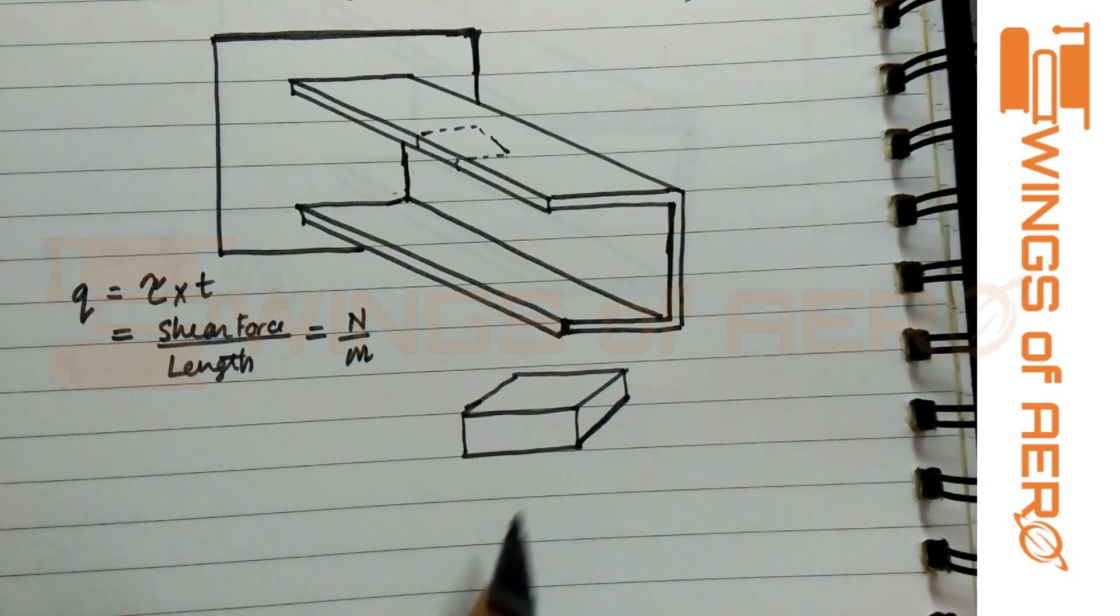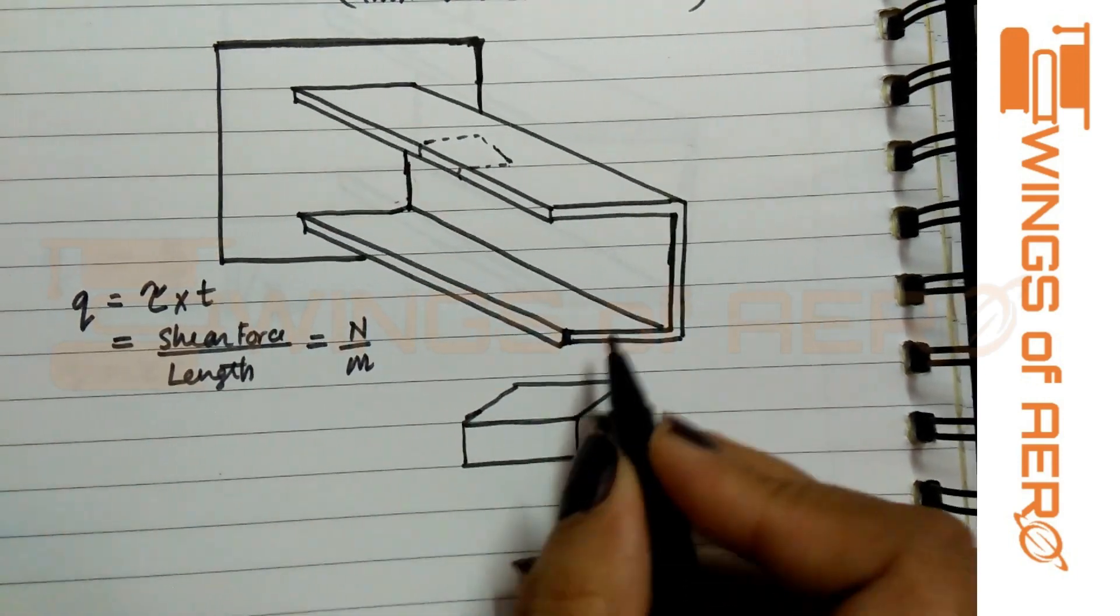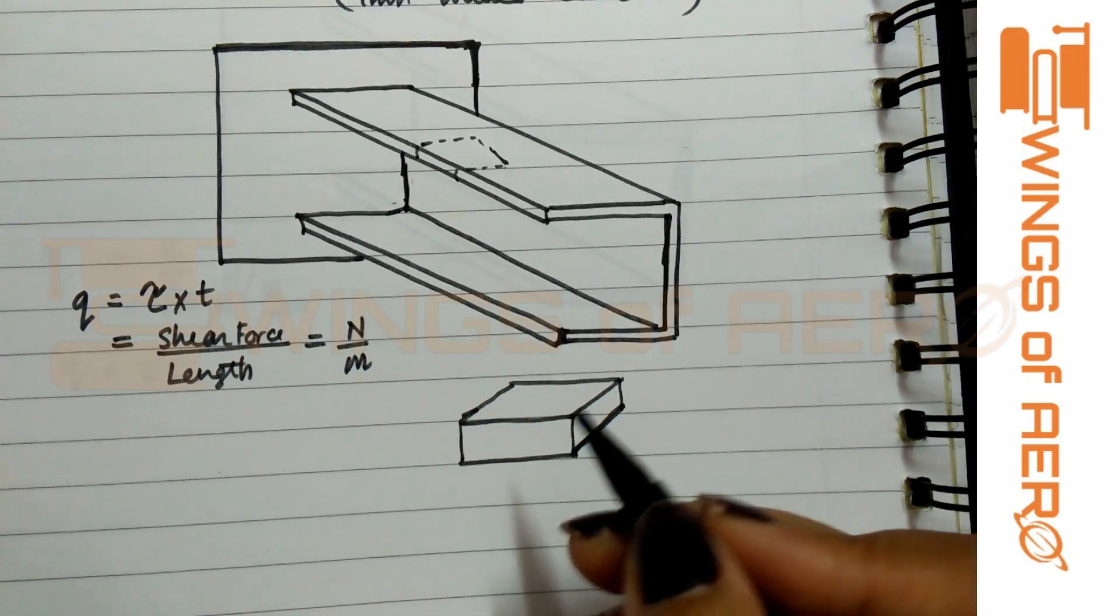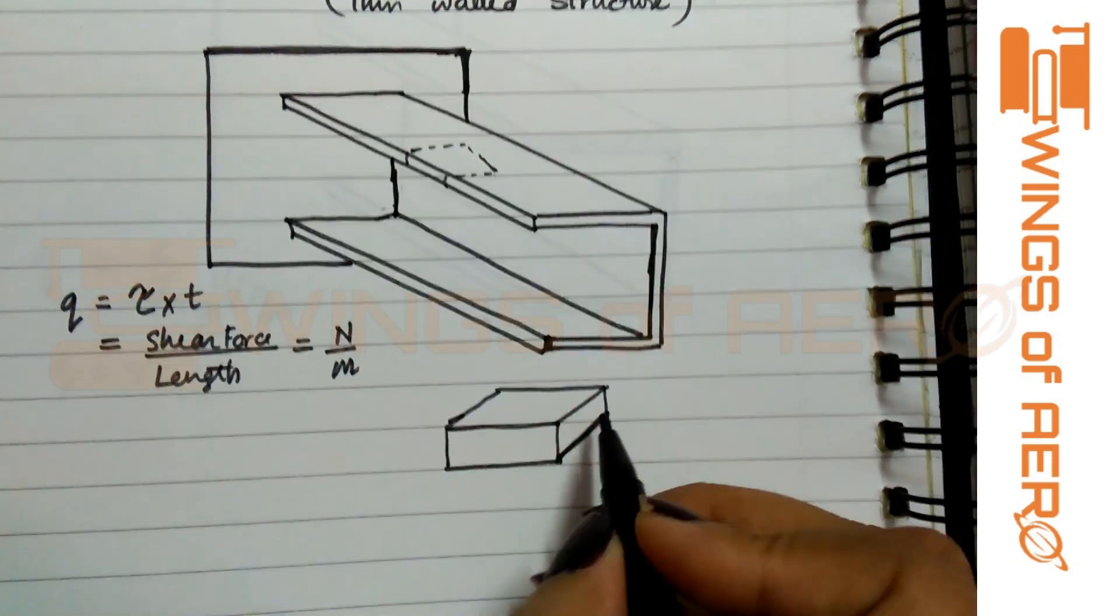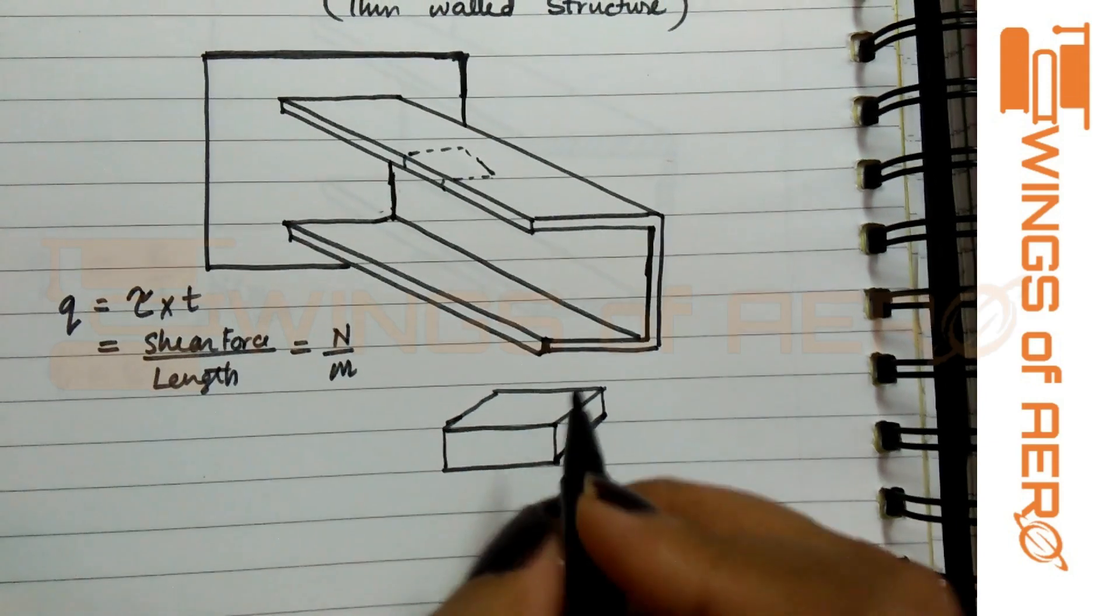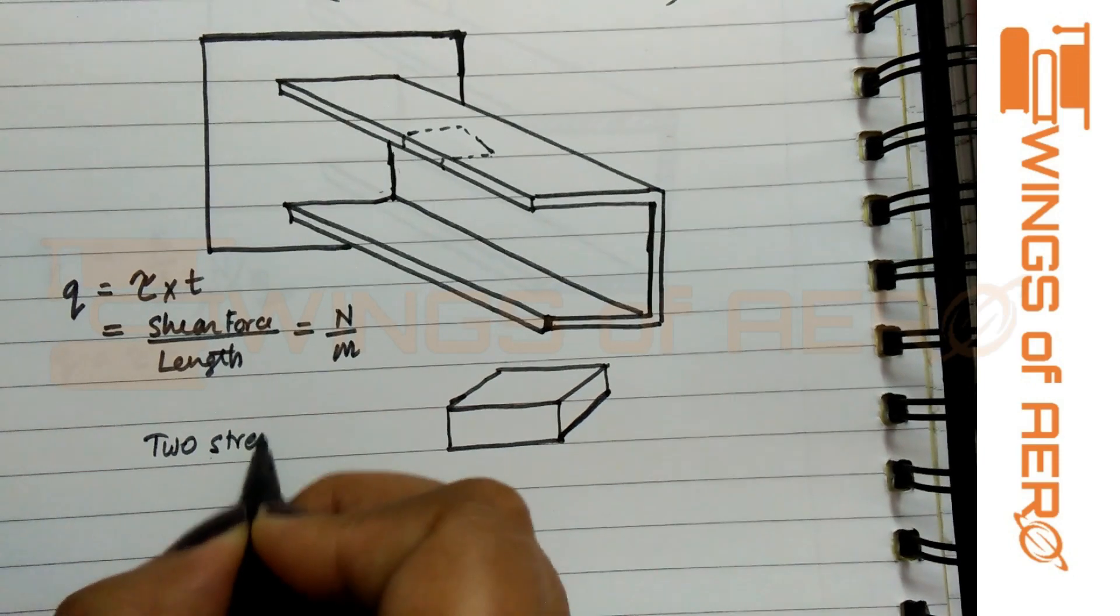Now, when the load applies on this particular section—when the load is applied vertically, it may be a point load, UDL, or variable load—it causes two types of stresses: the first one is direct stress and the second one is shear stress.